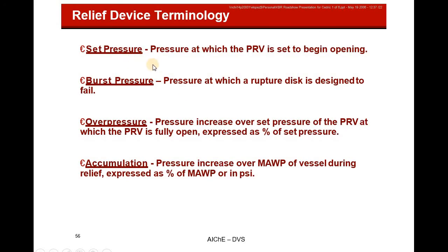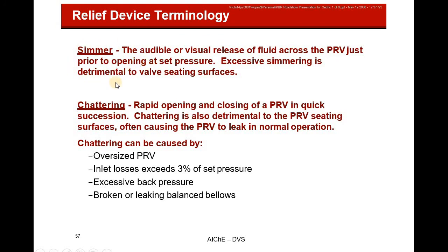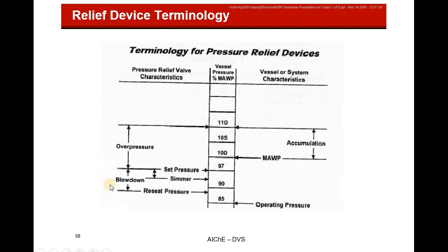Relief device terminology review: set pressure is when the valve opens; burst pressure is when the rupture disc ruptures; overpressure is the percentage above set pressure; accumulation is the percentage above the maximum allowable working pressure (MAWP). Simmer involves sound and visual indicators near the set pressure. Chattering is when the valve opens and closes rapidly due to bad design - mainly from an oversized relief valve, excessive back pressure, inlet losses exceeding 3% of set pressure, or a broken balance bellows.